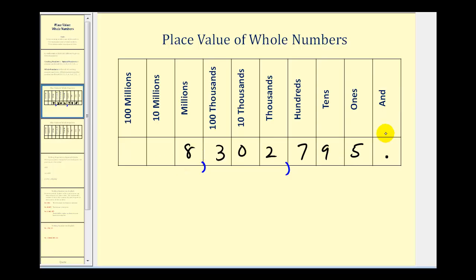Notice how in the place value chart I did include the decimal to the far right. Because we're not going to have any digits to the right of the decimal for whole numbers, we normally do not include the decimal point. The reason I wanted to include it is that the word 'and' is used to represent the decimal point, so we shouldn't use 'and' when we say whole numbers. Sometimes you'll hear people say 'seven hundred and ninety-five,' but technically that would not be correct.